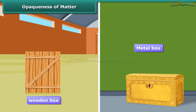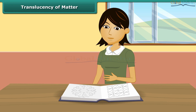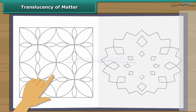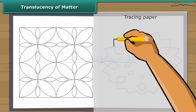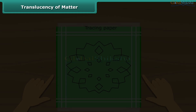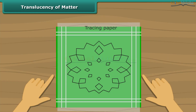For example, we cannot say what is kept in a closed wooden box or a metal container, as wood and metal are opaque. Rekha is getting ready to embroider a handkerchief. She has located a pattern in a book and wants the same on her handkerchief. She uses tracing paper to copy the pattern from the book onto her hanky. What made this embroidery possible was the translucent tracing paper.